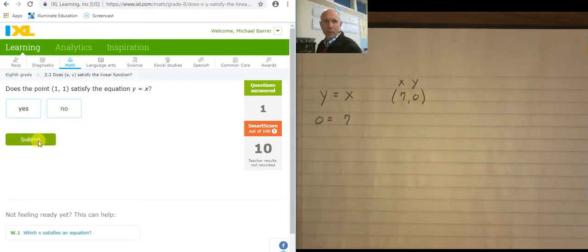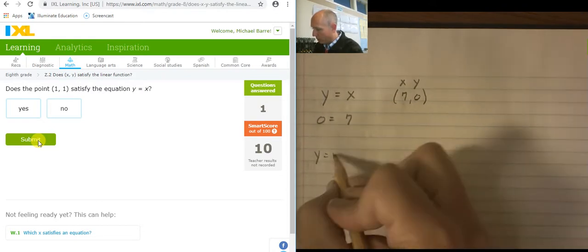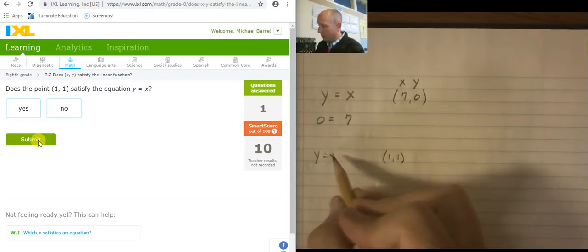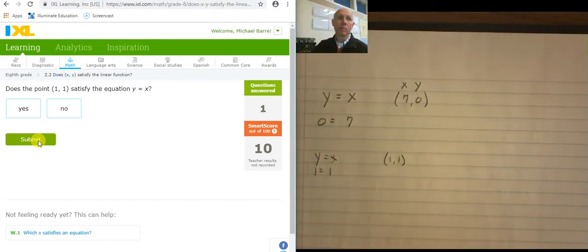Okay, so now I have the exact same type of thing. This is y equals x and the point is 1 comma 1. Plug in a 1 here, plug in a 1 here. So 1 equals 1. Yes or no? Yes.